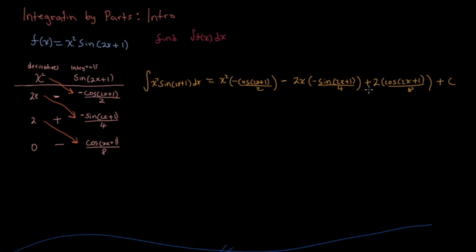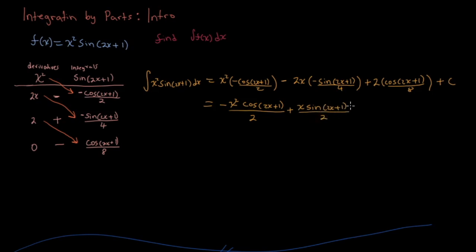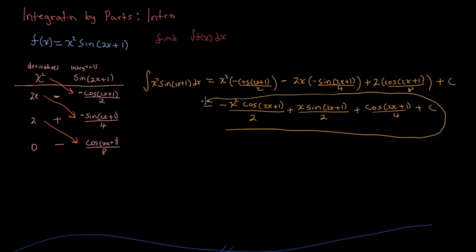So what we can do is we can simplify this. I'm going to go right to the final form of what it will look like at the end. It will look like: negative x² cos(2x+1)/2 plus x·sin(2x+1)/2 plus cos(2x+1)/4 plus C. And this right here is our answer — that entire expression is the integral.